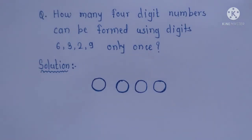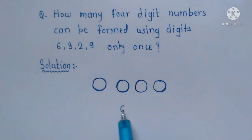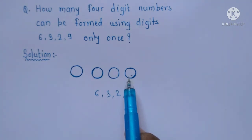There are four digits: 6, 3, 2, 9. Now here we can fill digits in four ways, means we can fill either 6 or 3 or 2 or 9, so there are four ways or chances to fill this circle.